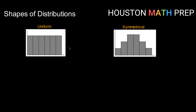Things to notice about a uniform distribution is that all of our categories have approximately the same number of items in them — our data is uniformly distributed over its range. In a distribution like that, because it is symmetrical, our mean and our median tend to be the same or very close to the same, and they lie in the center of the distribution. So with a uniform distribution, everything is nice and simple — mean and median are right in the center.